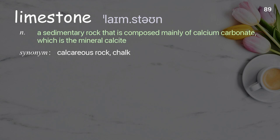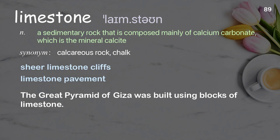Limestone: a sedimentary rock that is composed mainly of calcium carbonate, which is the mineral calcite. Examples: sheer limestone cliffs, limestone pavement. The Great Pyramid of Giza was built using blocks of limestone.